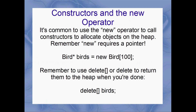Constructors and the new operator — it's really common to use the new operator to call constructors and allocate objects on the heap. Remember that the new operator requires a pointer. `Bird* birds = new Bird[100]` — that is going to allocate space on the heap for 100 birds, and once it's done that, it's going to call the constructor for every individual bird. Every one of those 100 is going to have its own default constructor called. Remember to use the `delete[]` operator to return these birds to the heap when you're done.